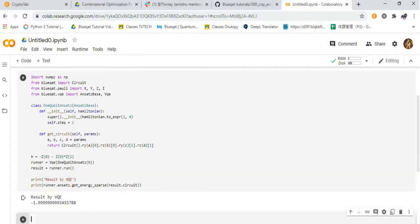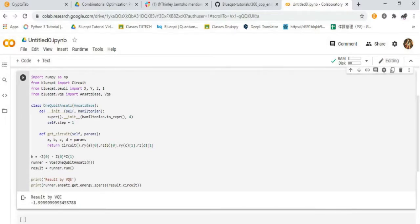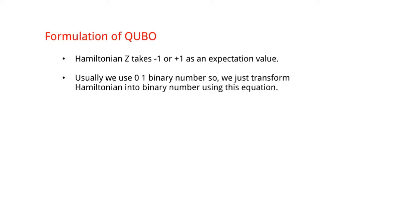Here, we used Z for operator, now we use a technique to transform it into 0 1 binary number. Now, formulation with QUBO. If we use Z in the Hamiltonian, Z takes minus 1 or plus 1 as an expectation value. But it is little bit uncomfortable for the social problems. Usually we use 0 1 binary number, so we just transform Hamiltonian into binary number using this equation. This is the transform of minus 1 to 0 and we now can use QUBO as a formulation.